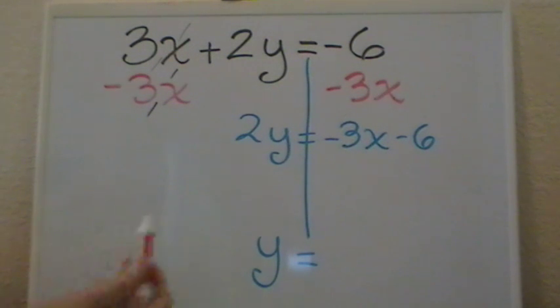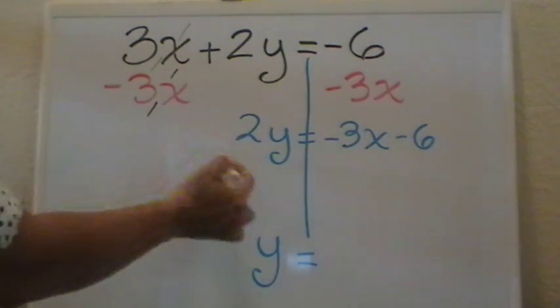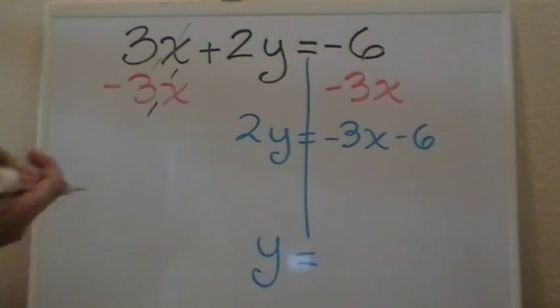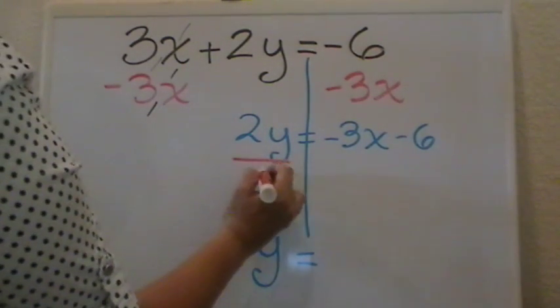My next step now is to get rid of the number 2. If I want to get rid of the number 2 now, again, I want to separate the 2 and the y. I will have to do the opposite. So what is the number 2 doing to y? Multiplying. So the inverse operation would be divide. So I divide by 2.